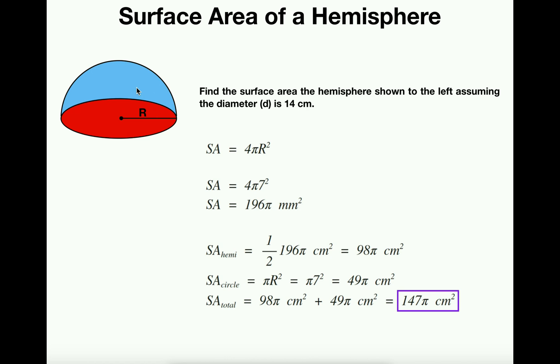That's going to be our top half of the sphere. That's one face. We'll call that the surface area of the hemisphere, the top that is. But we also have this red circle that's now on the bottom. And so we now have to add on the surface area of the circle.